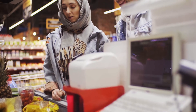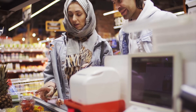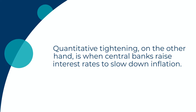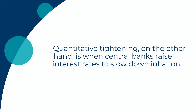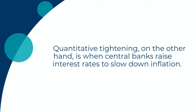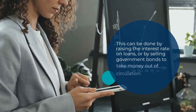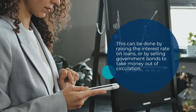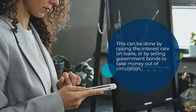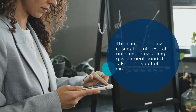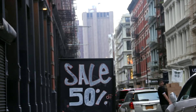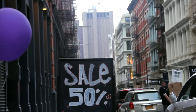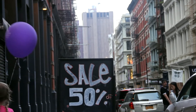Quantitative tightening, on the other hand, is when central banks raise interest rates to slow down inflation. This can be done by raising the interest rate on loans or by selling government bonds to take money out of circulation, which causes inflation to come down.